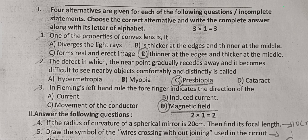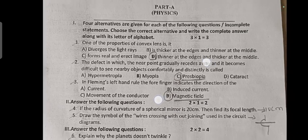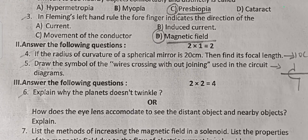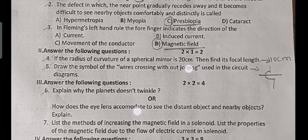Question 1: One of the properties of a convex lens — answer is D: thinner at the edges and thicker at the middle. Question 2: The defect in which the near point gradually recedes away and it becomes difficult to see nearby objects comfortably is called presbyopia. In Fleming's left-hand rule, the four fingers indicate the direction of the magnetic field — answer is D.